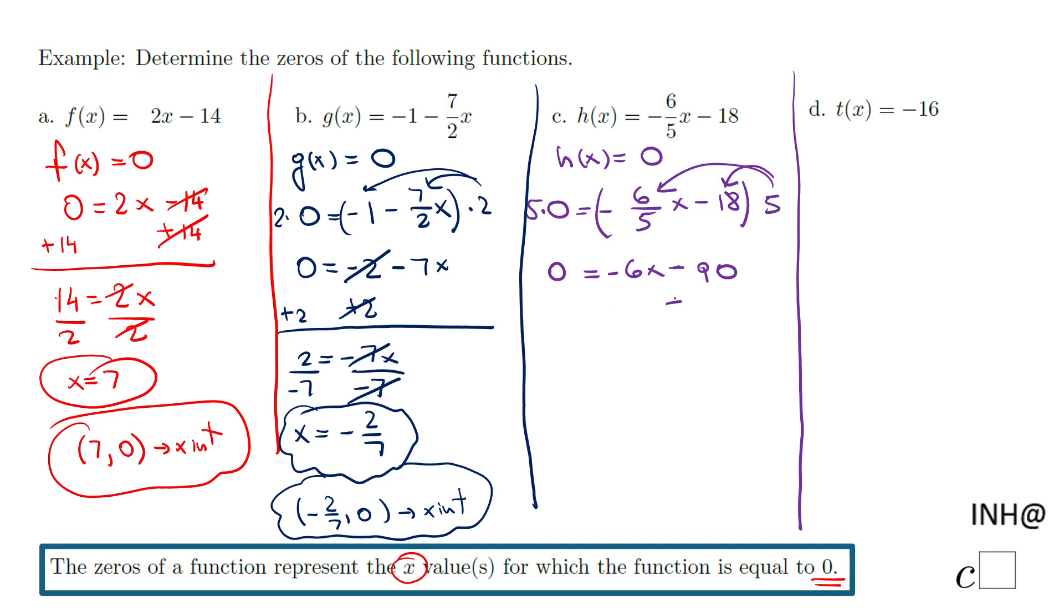I'm going to add 90 now. Very similar with the other two parts from here. And I have 90 equals negative 6x. And the last thing, divide by negative 6.